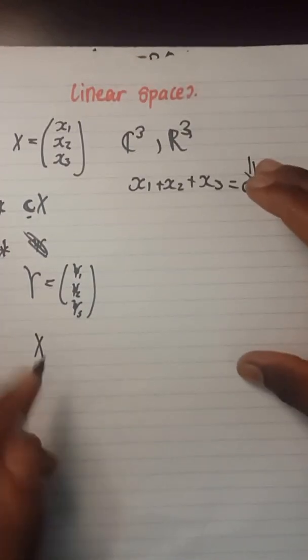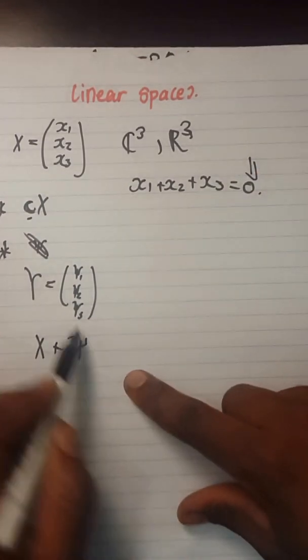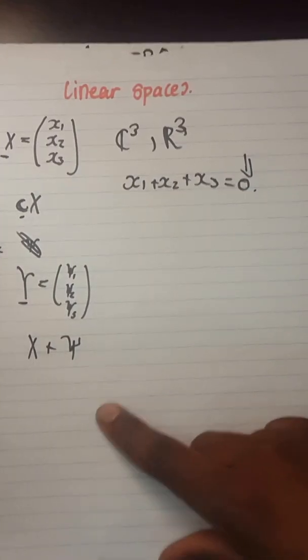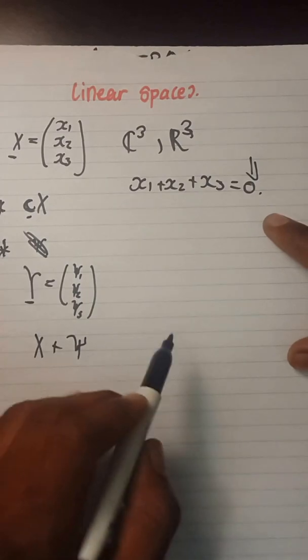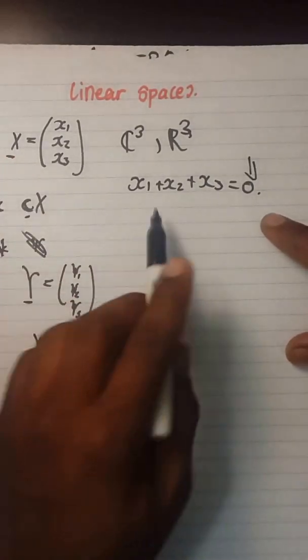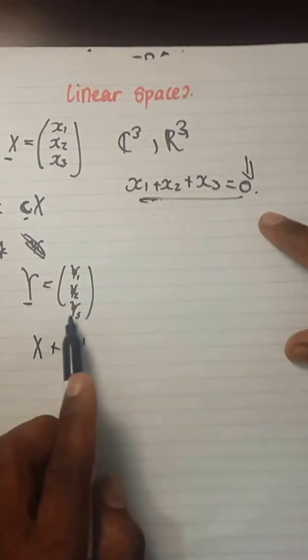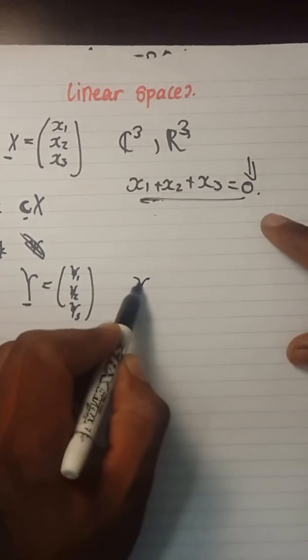You have to add these two vectors, X plus Y, to get the right hand side. Note that Y will be written in the same form - the rule of Y will be the same as the one for X.